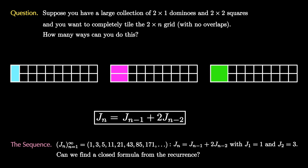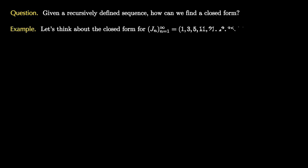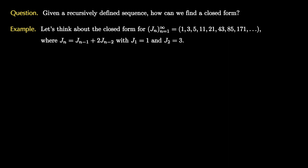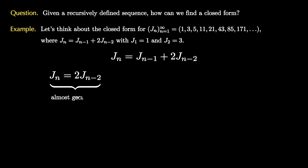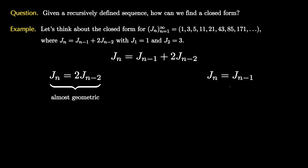Can we use this recurrence and the initial conditions to find a closed formula? Our goal is to find a closed form for a recursively defined sequence. Starting with the recurrence j_n equals j_{n-1} plus 2·j_{n-2}, if we leave off the first term we have a recurrence that is almost geometric, or if we leave off the second term we have a sequence that is geometric.